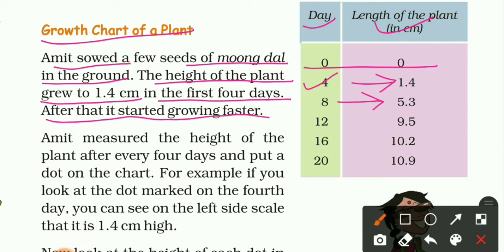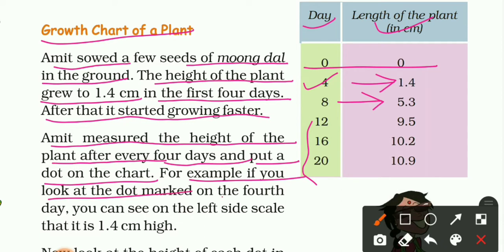Amit measured the height of the plant every four days and put a dot on the chart. For example, if you look at the dot marked on the fourth day, you can see on the left side scale that it is 1.4 centimeter high. Yes, there is a bar graph. We will see that.